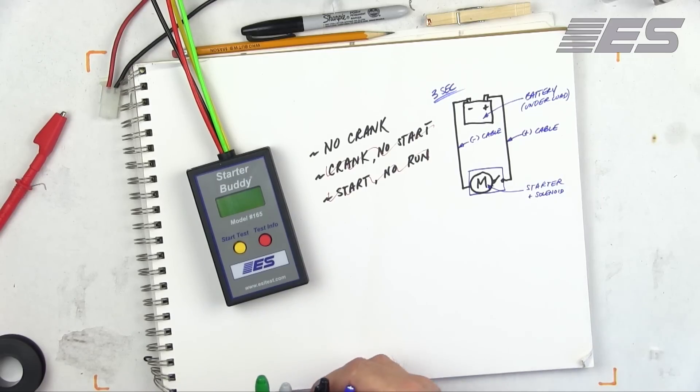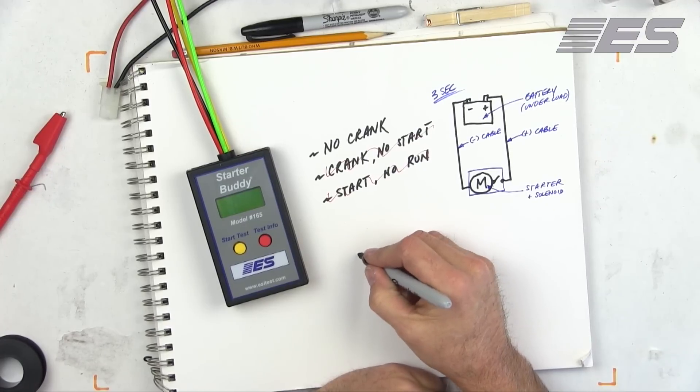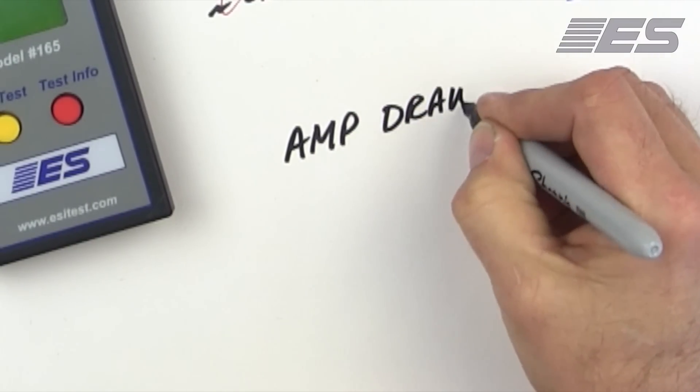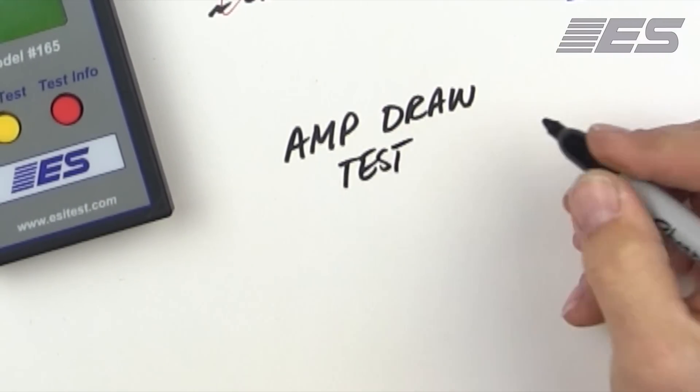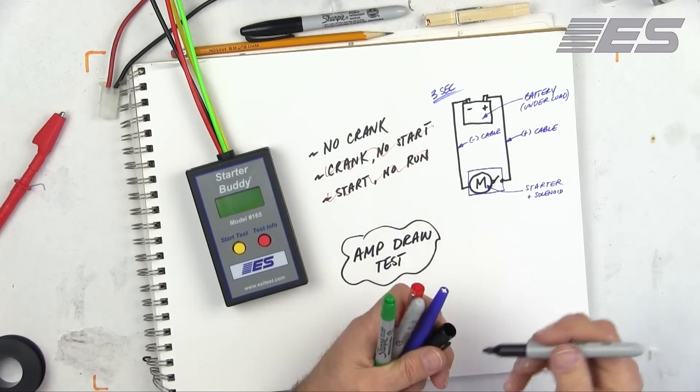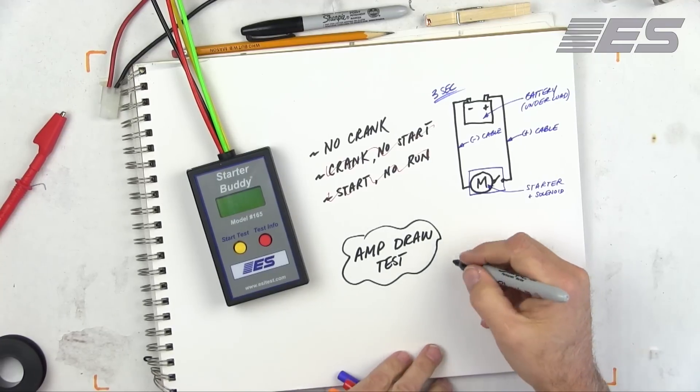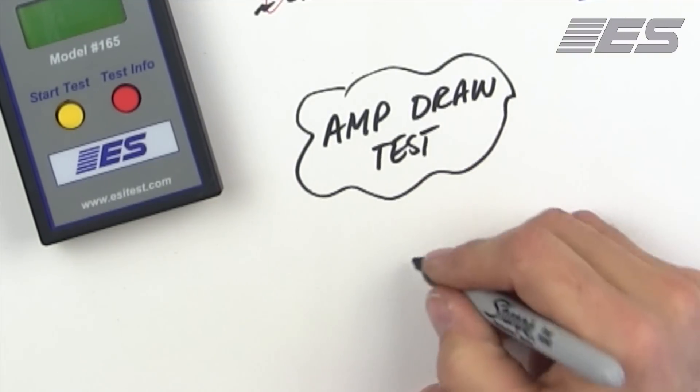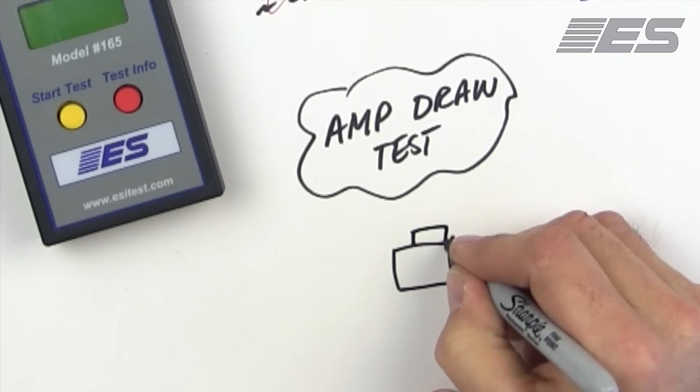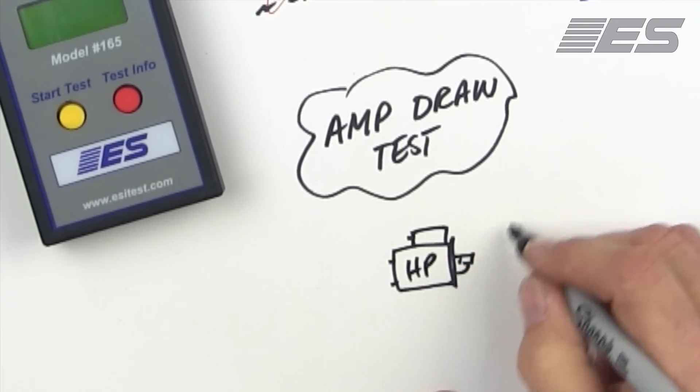Now, the other thing is, and this is important, a lot of people think they're doing the right thing when they do the starter amp draw test. Well, the amp draw test is not a diagnostic test. This test is not to diagnose a no crank. That's not what this is for. What this is for specifically is we need to know whether or not the starter is actually producing adequate horsepower. The starter's got to produce horsepower. If it doesn't produce horsepower, it's not going to be able to turn the engine.